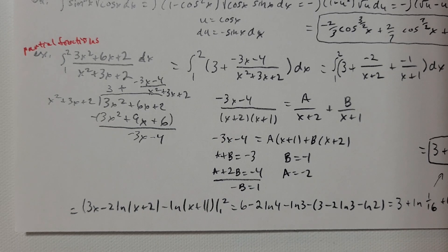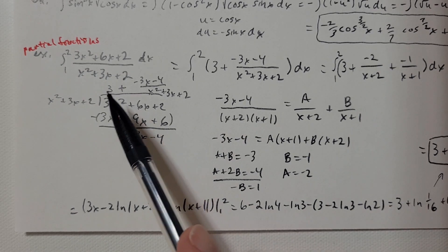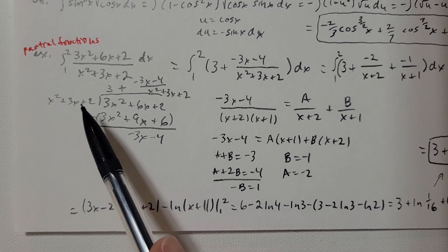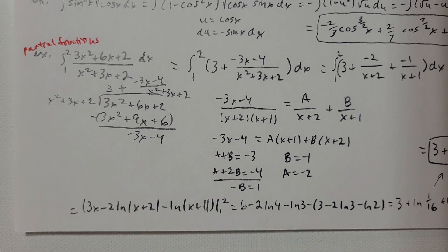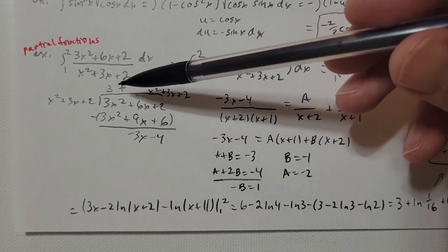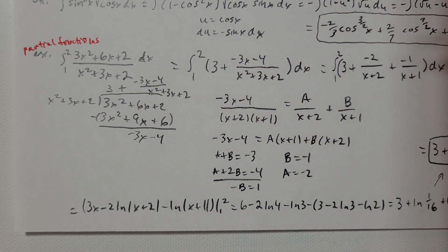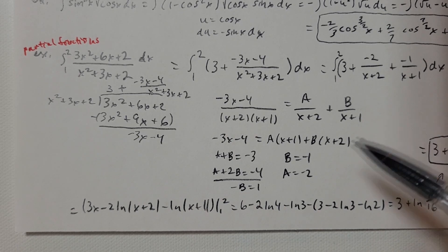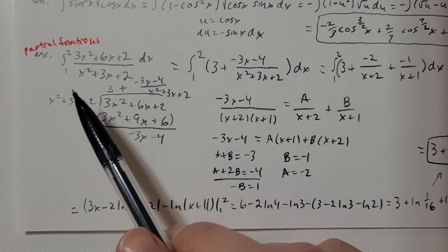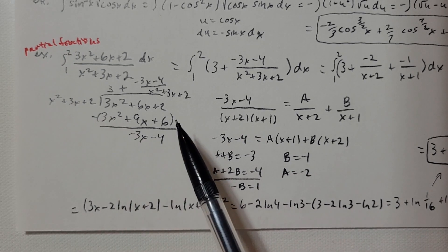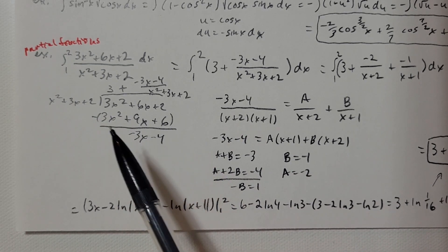So the first thing I'm thinking of is to actually divide that out. The expression in the denominator goes outside the division bar, and the expression in the numerator goes underneath the division bar, and we're ready to divide. If we multiply x squared plus 3x plus 2 by 3, then the leading term is 3x squared, plus 9x plus 6, and I'm subtracting that.